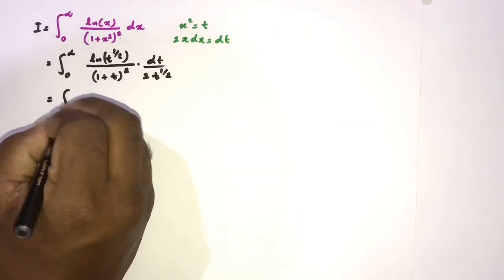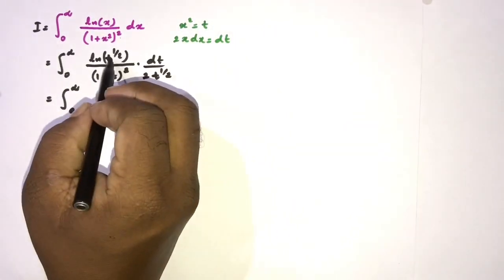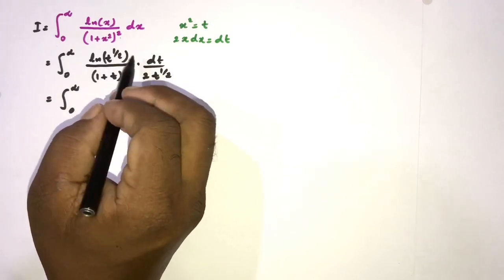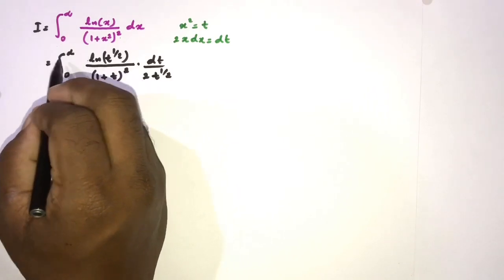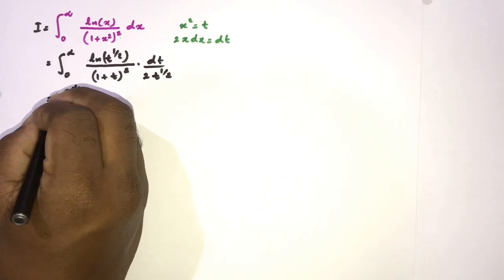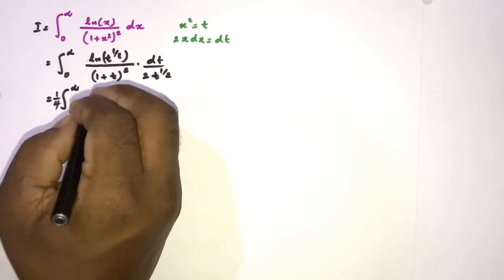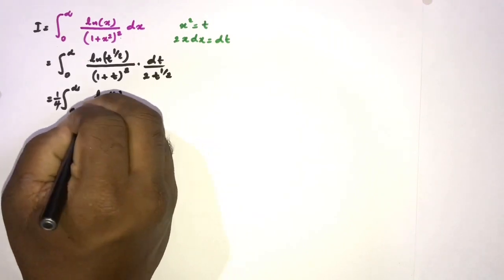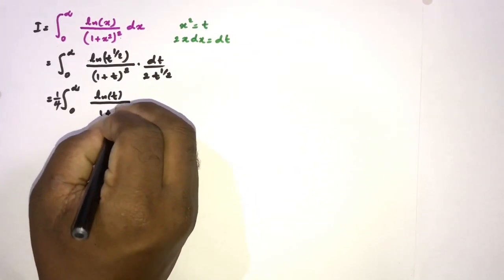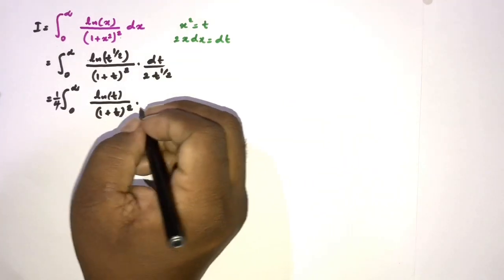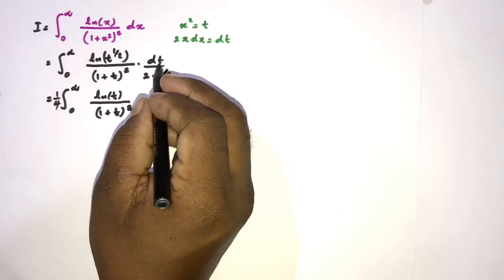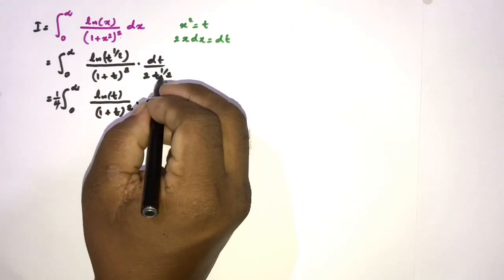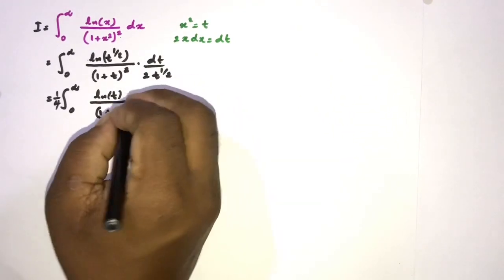We can simplify. The integral runs from 0 to infinity. By the log property, we can write one-half in front of the natural log, taking one-half outside the integral sign. Combined with the 2 in the denominator, we get one-quarter times the integral of natural log(t) over (1+t) squared, dt.